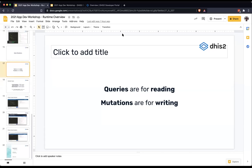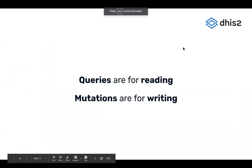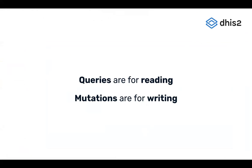As I mentioned before, queries are for reading and mutations are for writing. When you're dealing with information in DHIS2, you can read that information — figure out what the name of an indicator is or the name of the current user. But you can also change those things. If your user has permission to change the name of an indicator, they can change the name or the formula used to calculate it. Every user has access to edit their own profile — things like email address, phone number, description, or name.